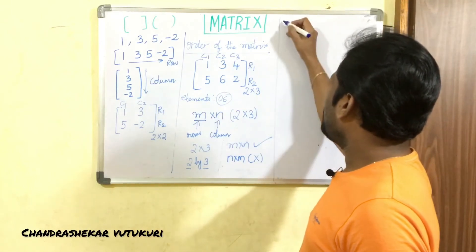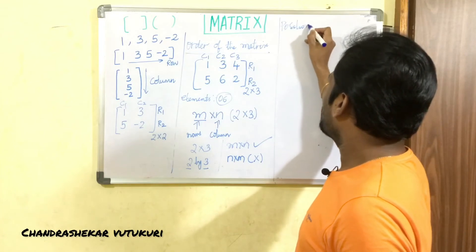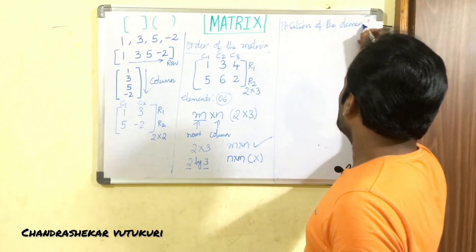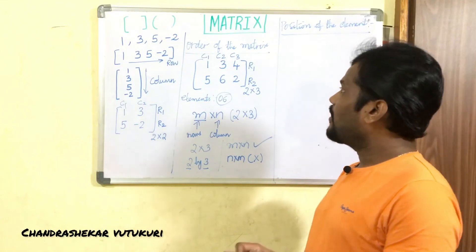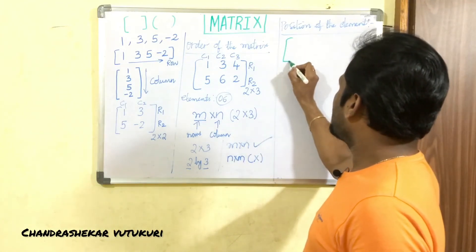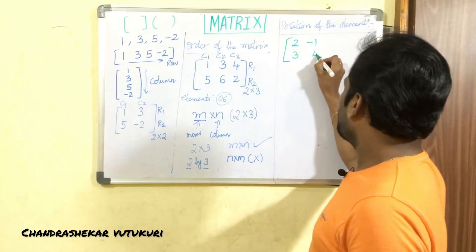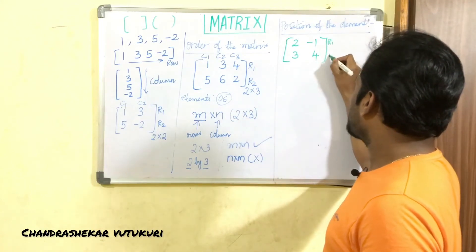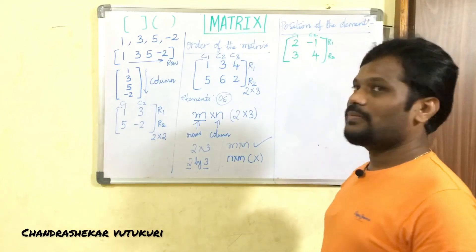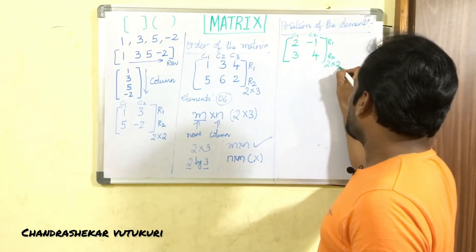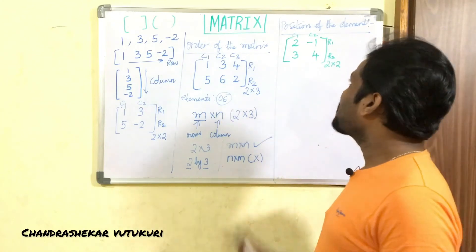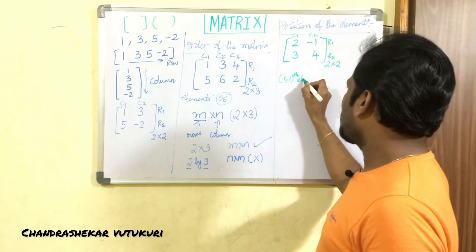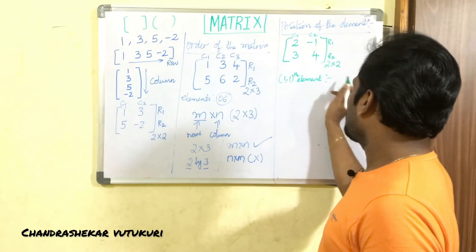Now let us discuss the position of an element in a given matrix. Consider a 2 by 2 matrix with elements 2, -1 in the first row and 3, 4 in the second row — with R1, R2 as rows and C1, C2 as columns. The numbers present within the matrix are called elements. The position is written as row number followed by column number.